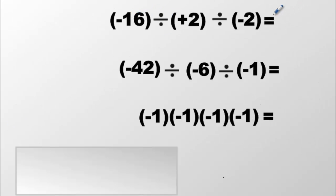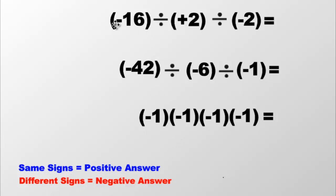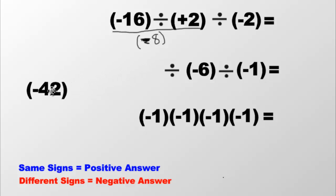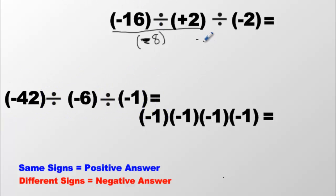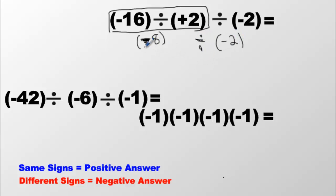Here we've got three numbers in a row. When you get this sort of scenario, let's review the rules: same signs gives positive, different signs gives negative. Do them two at a time — do these two first and write the answer down. We have a negative divided by a positive, which makes a negative. Sixteen divided by two is eight, so we write negative eight. Now our equation says negative eight divided by negative two, because that whole group just turns into negative eight. Negative divided by a negative is going to be a positive. Eight divided by two is four — we get positive four.